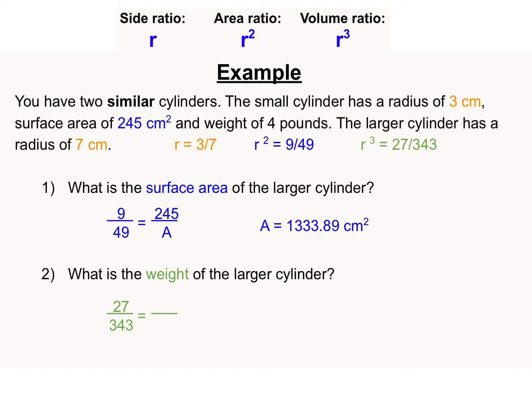We then can set up a proportion, similar to how we did with the surface area question, with the weight of the smaller cylinder on top. We set up and solve that proportion. 4 times 343 divided by 27 will get us our total volume, in other words, in pounds, of the larger cylinder.